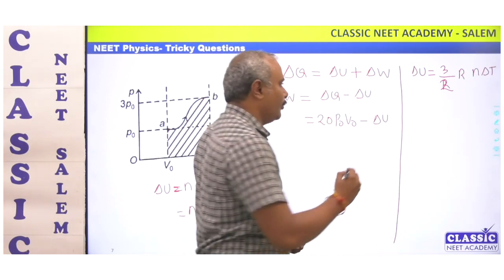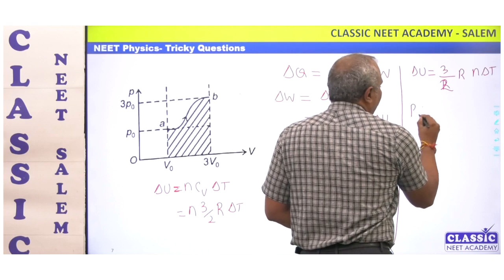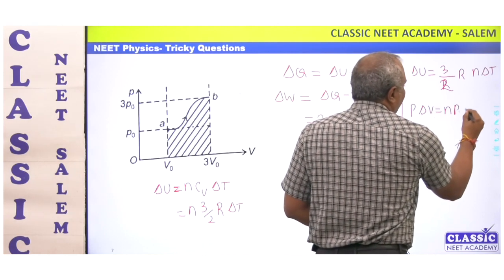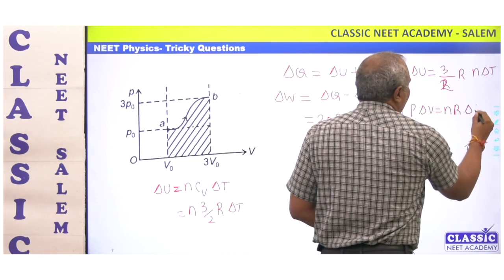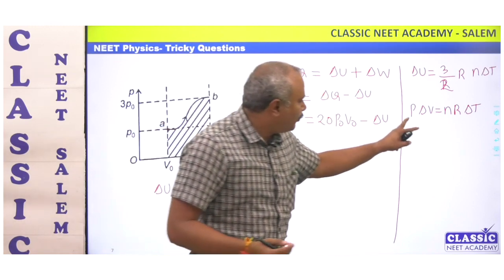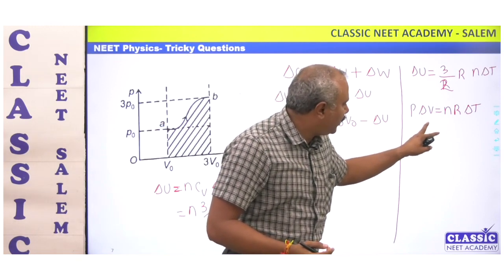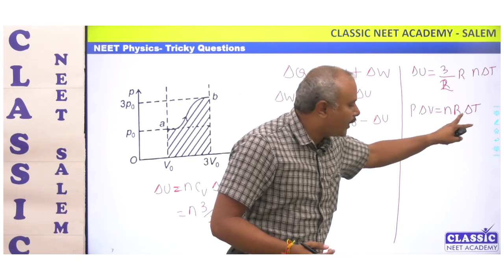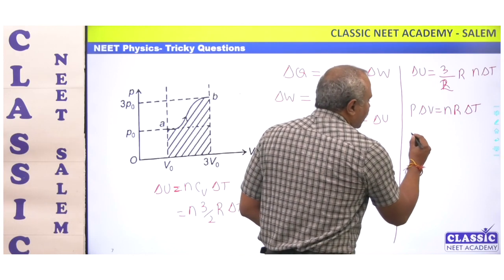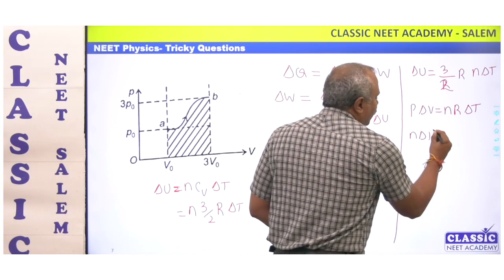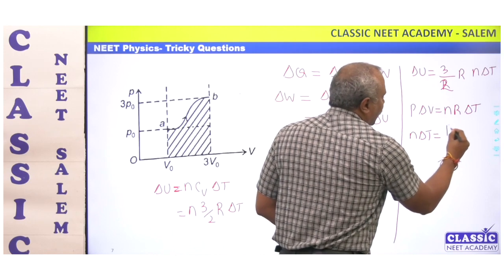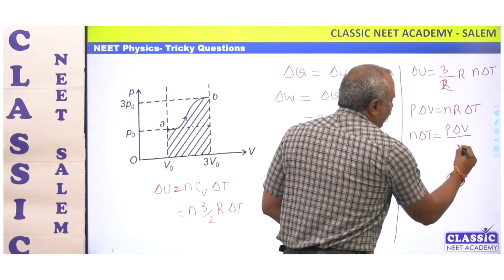From the ideal gas law, PV = nRT, we get P·ΔV = nR·ΔT. Therefore, n·ΔT = P·ΔV / R. We can now substitute this expression for n·ΔT into the formula for ΔU.